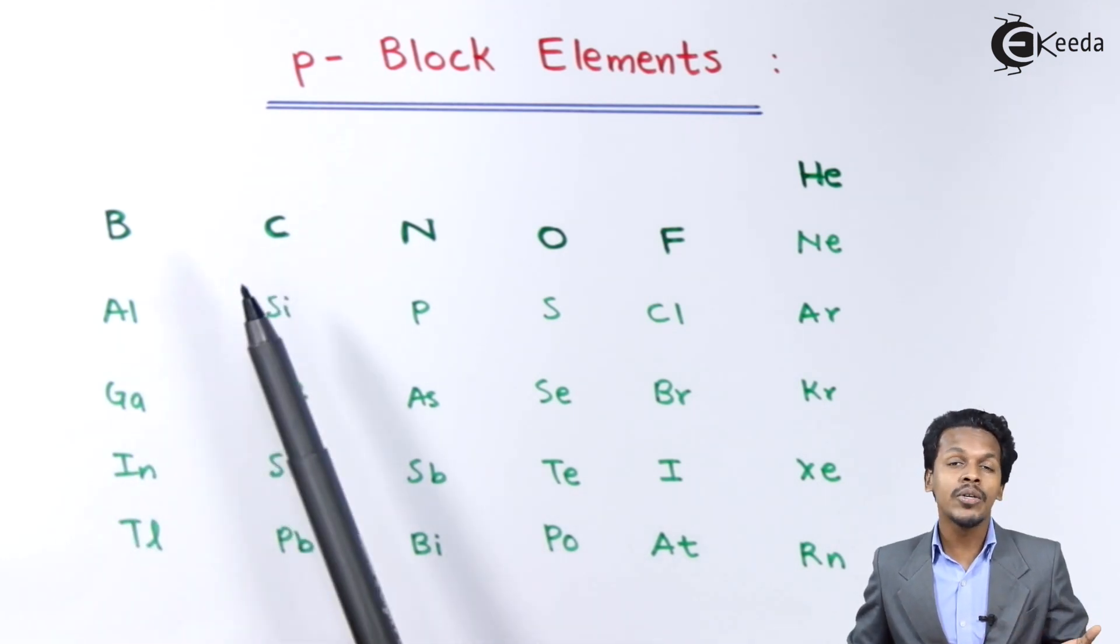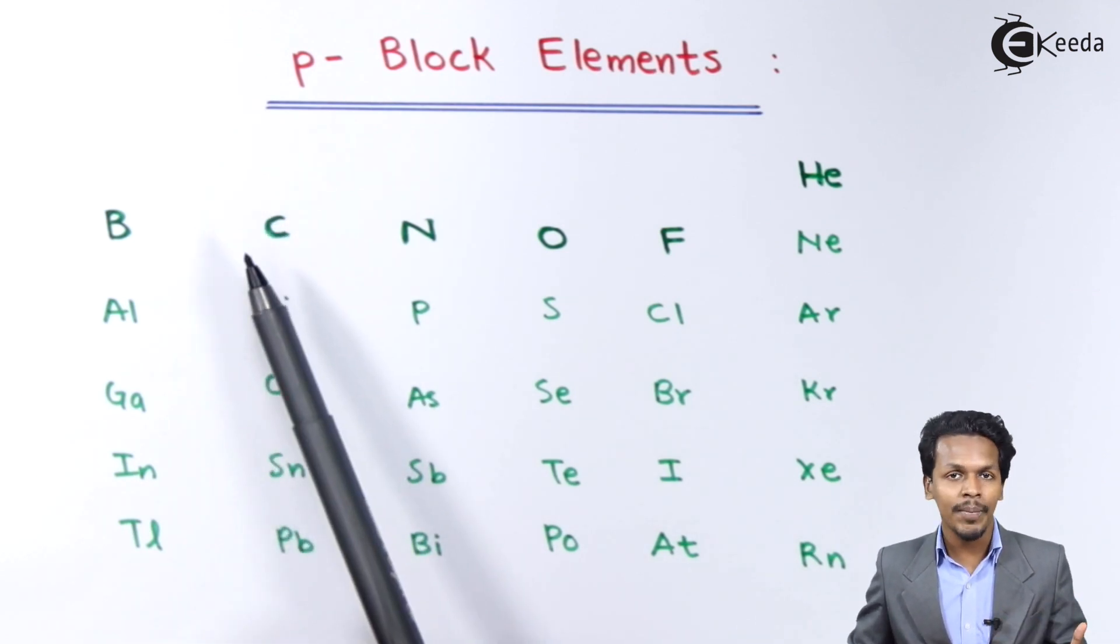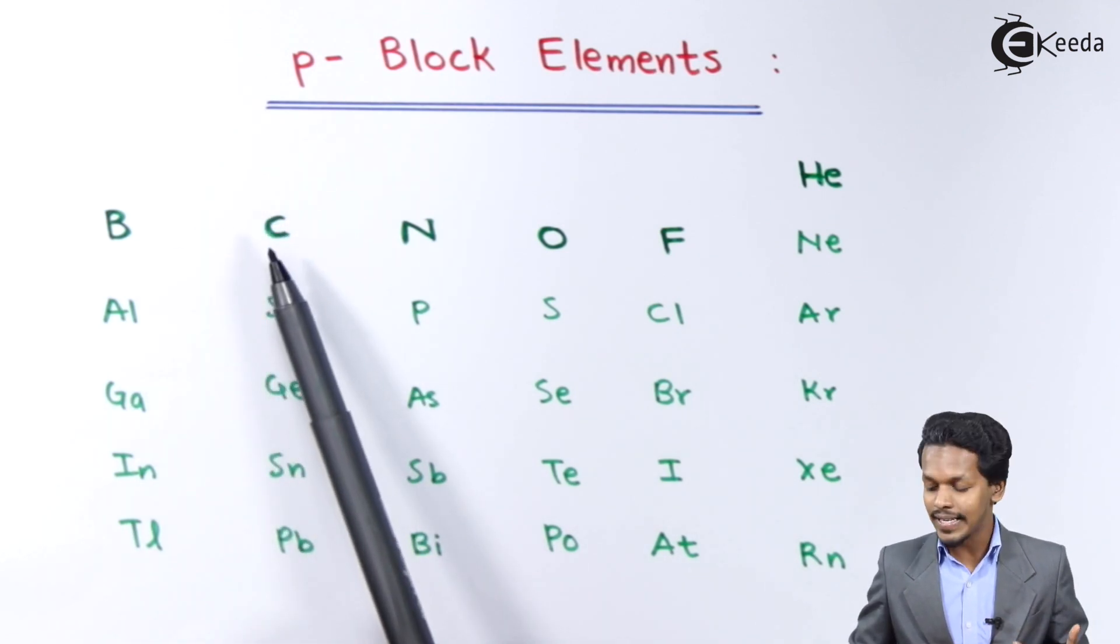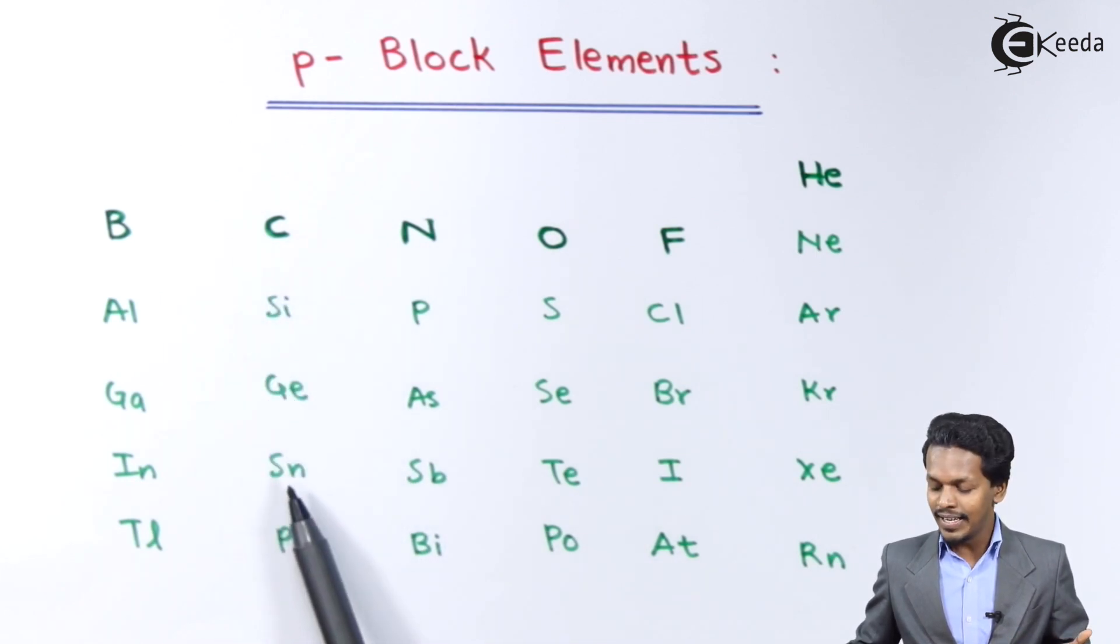Talking about Carbon, Carbon is the group 14 element, and all elements that are belonging to group 14 are known as Carbon Family Elements. Starting with the first one, this is Carbon, and after that it is Silicon, Germanium, Tin and Lead.